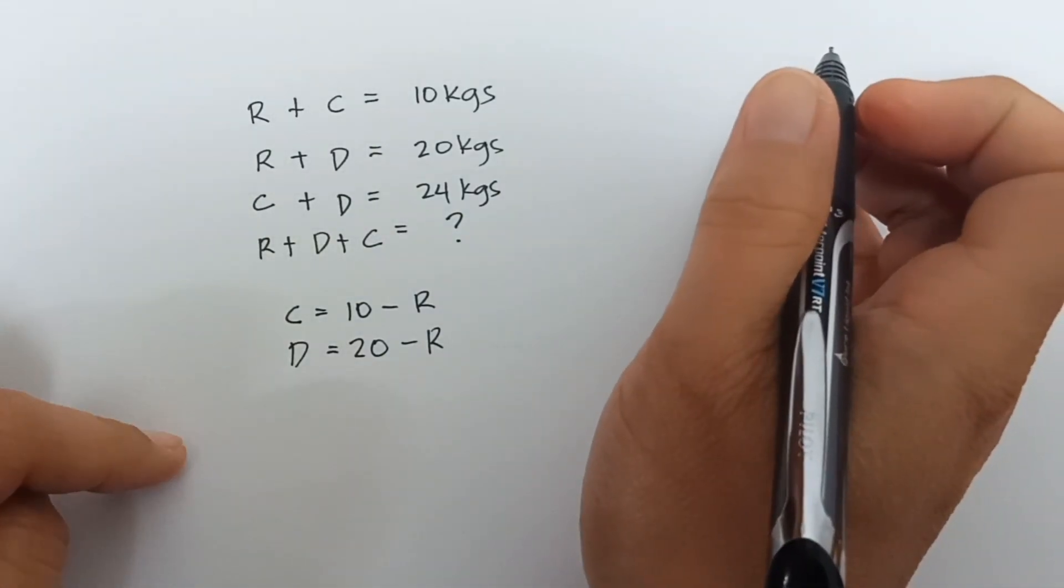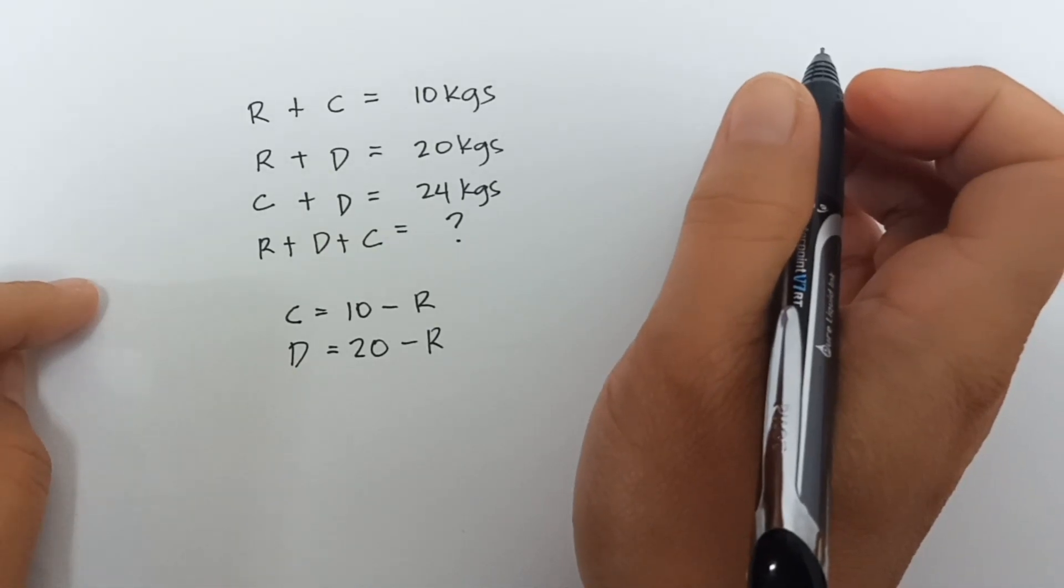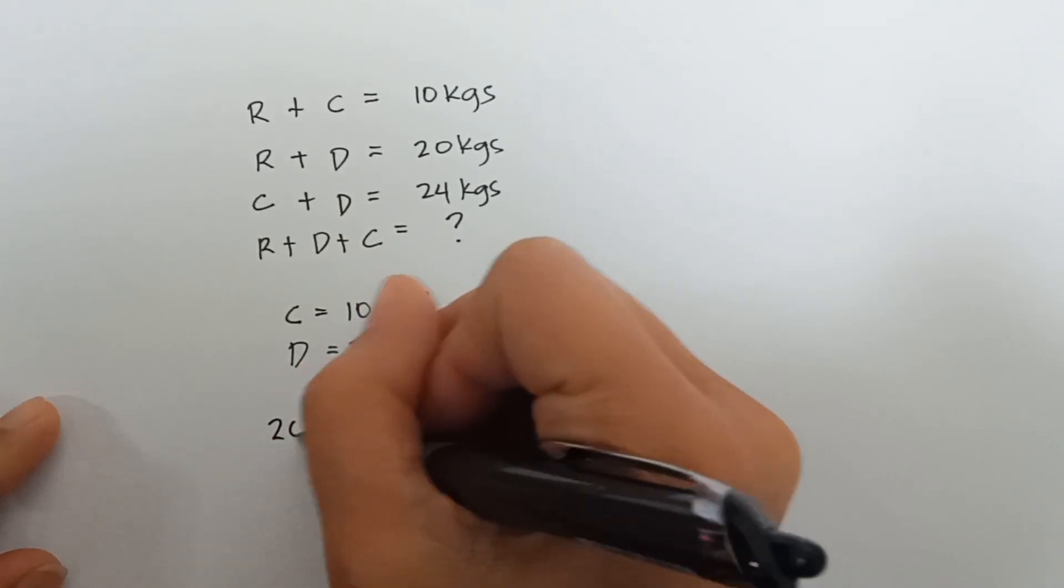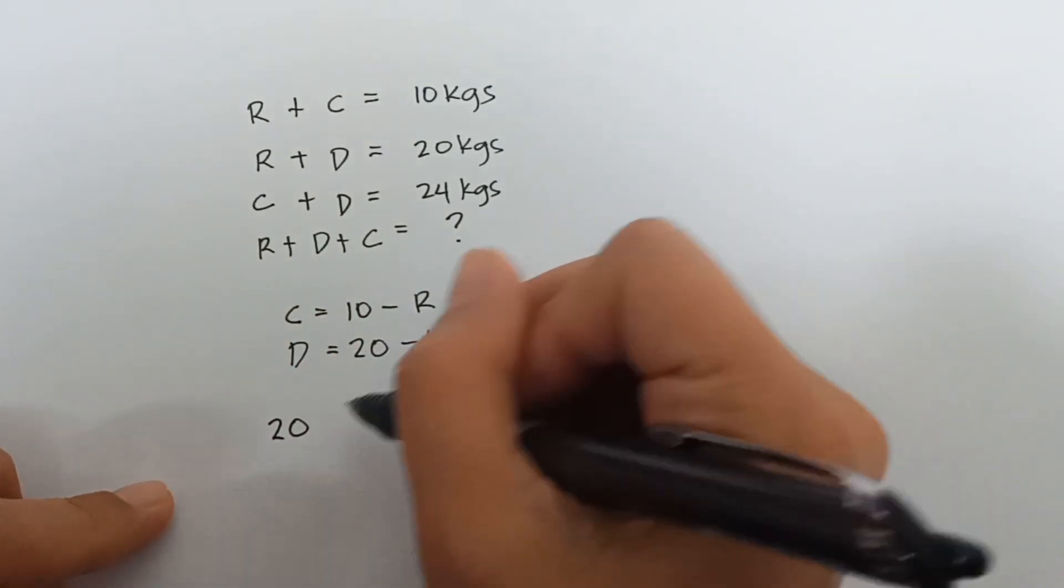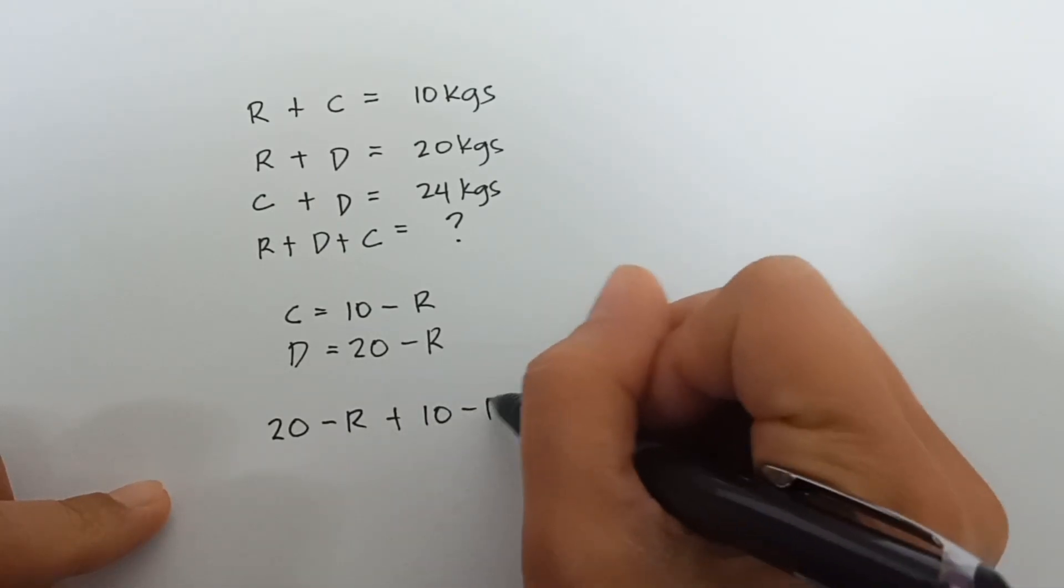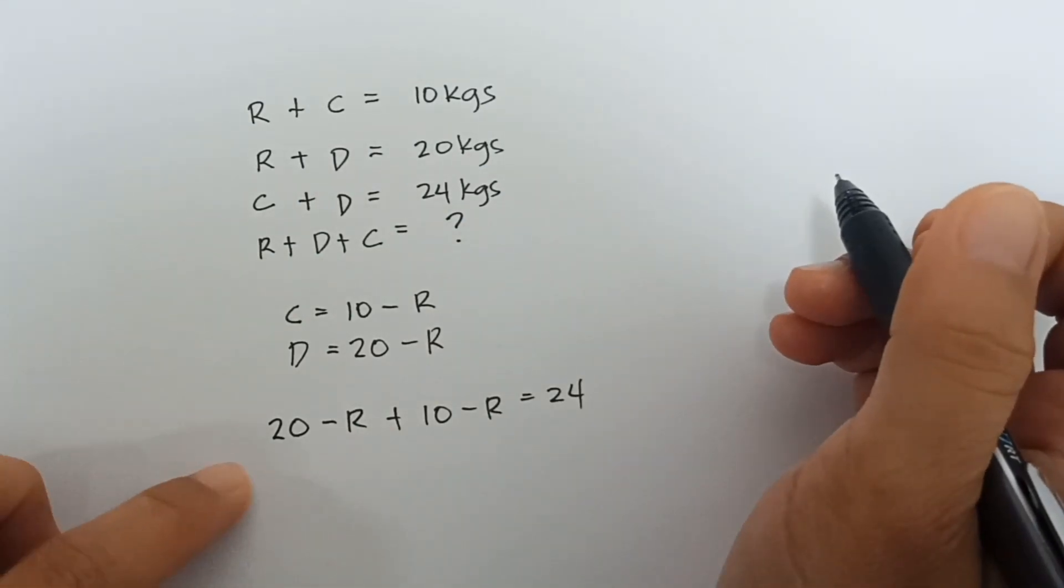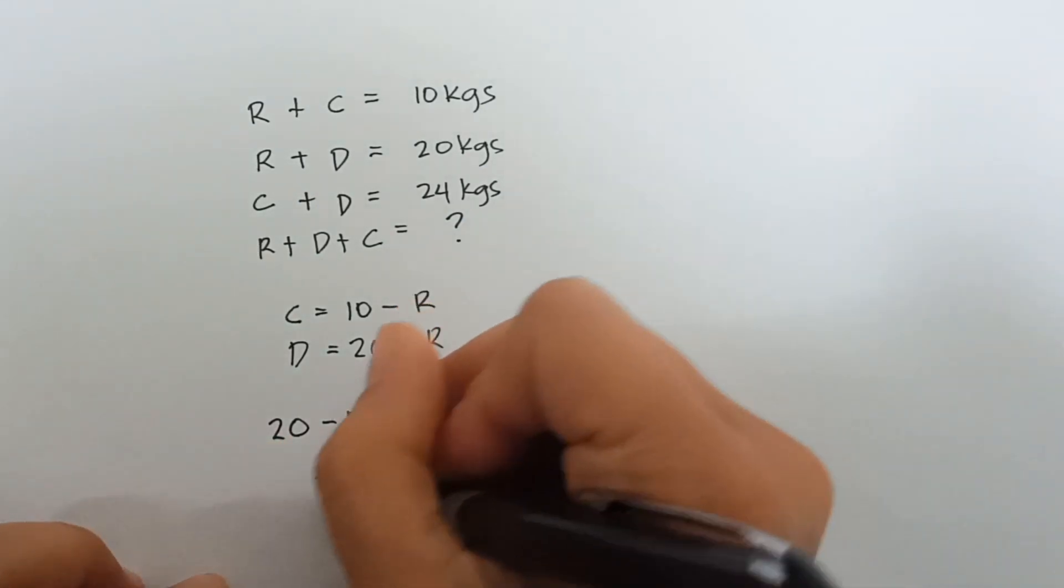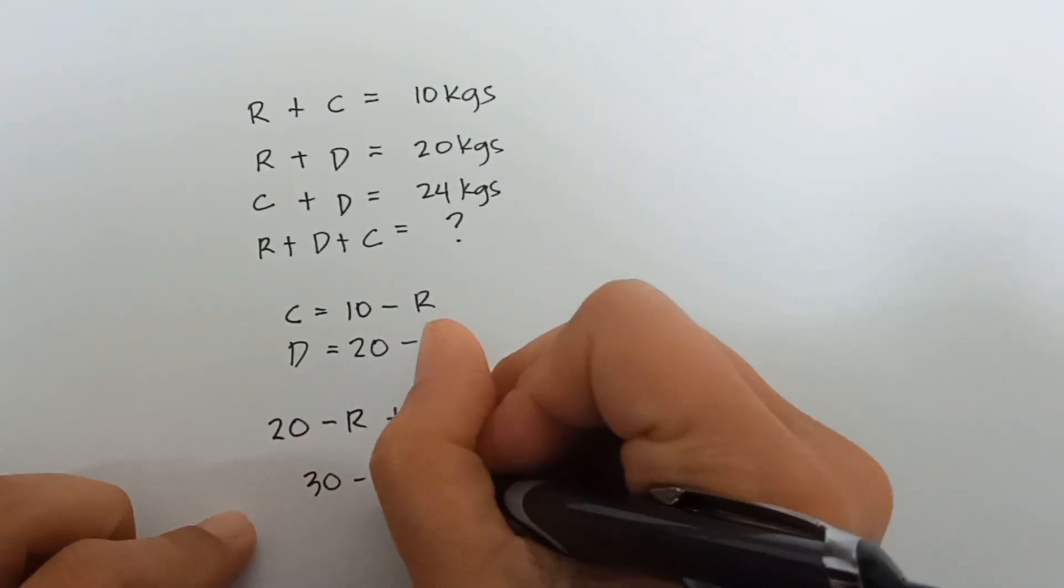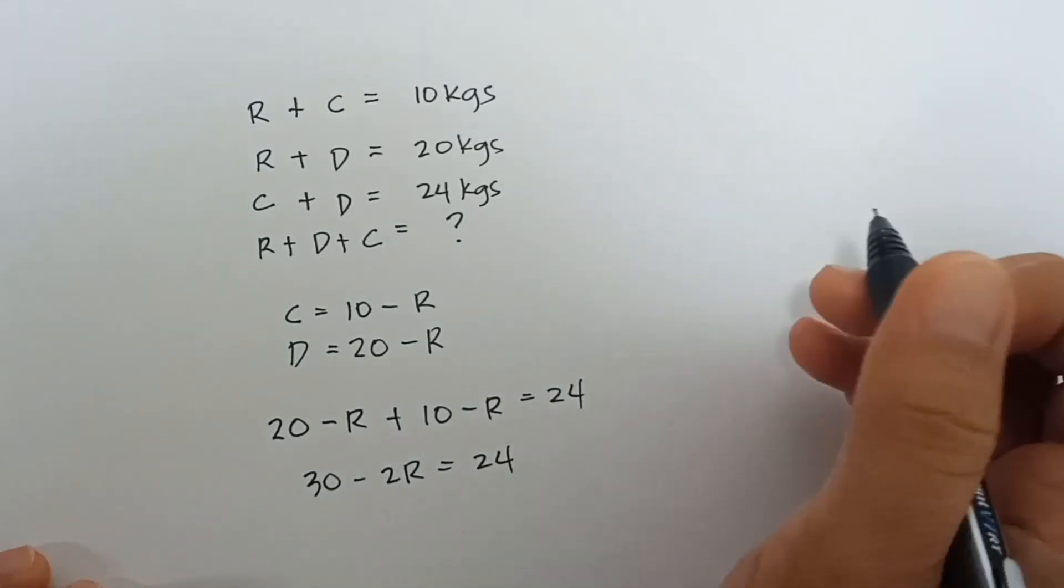So, let's add the 2 and then put the value of cat and the dog, which is 24. So, 20 minus R plus 10 minus R equals 24. So, 20 plus 10 equals 30 minus 2R equals 24.